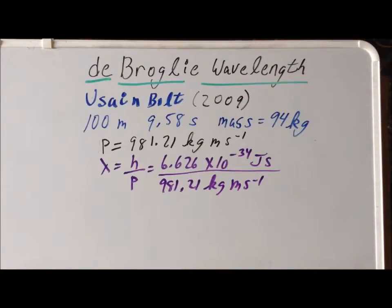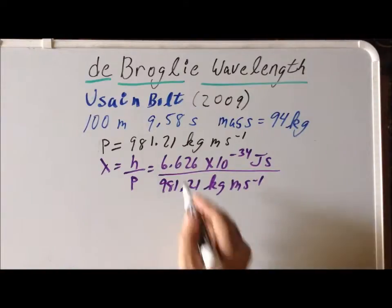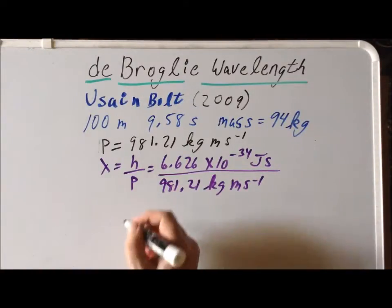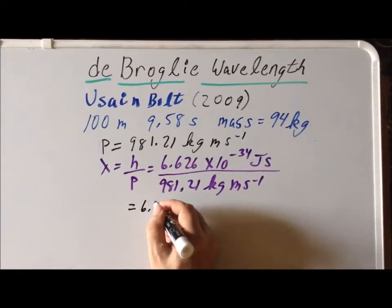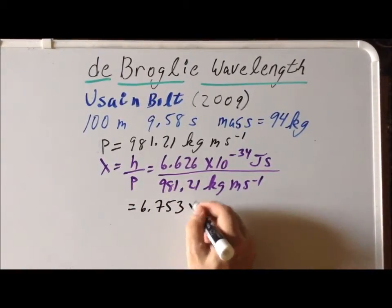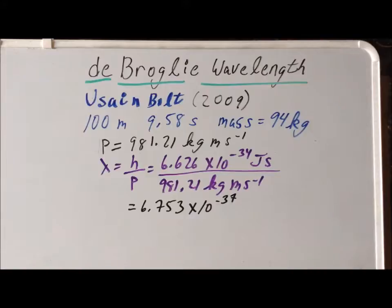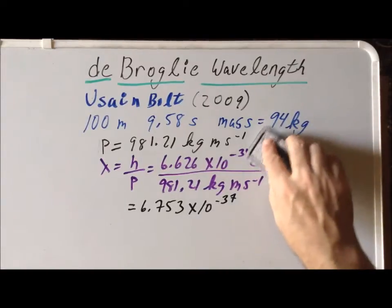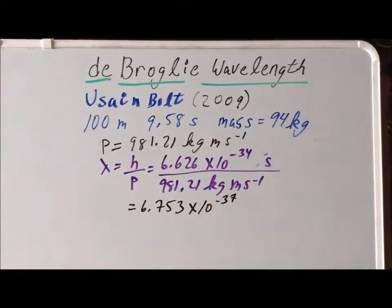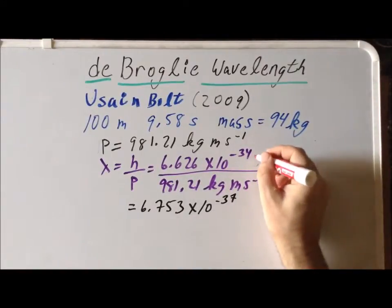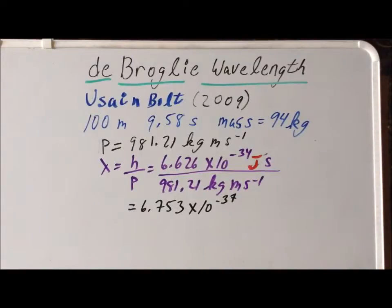Now we need to simplify this expression and convert it into a distance. Let's write out explicitly what the units of joules are. The units of joules are kilograms meters squared per second squared.